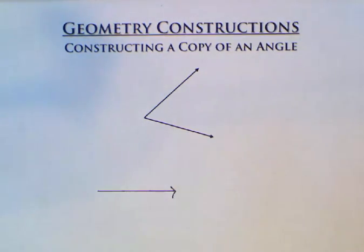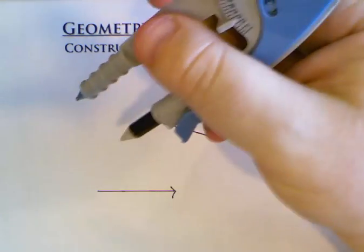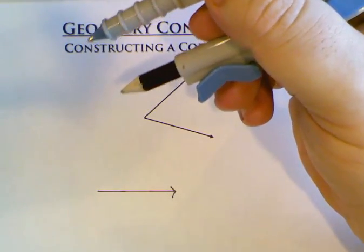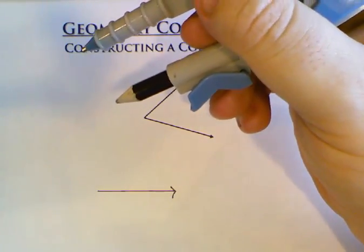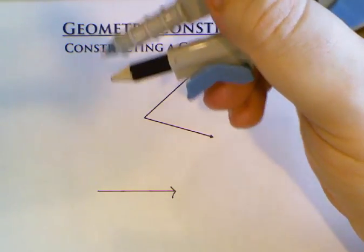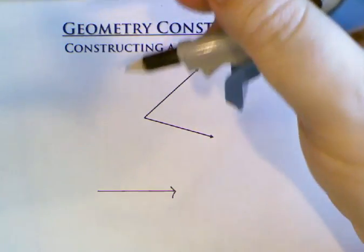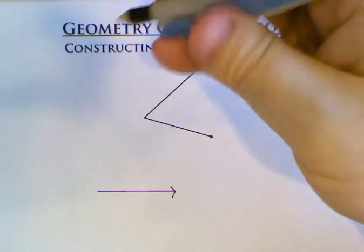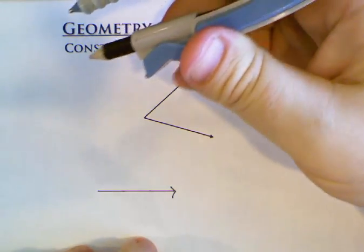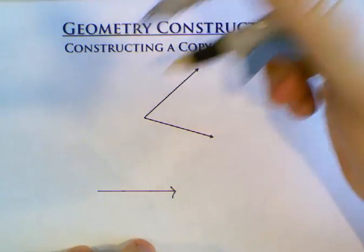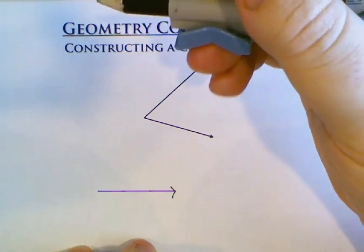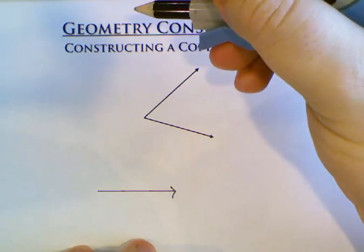The next thing is we need to make some arcs. Now to make these arcs you get to decide how big you want to open up your compass. Too small is hard to work with, really big is hard to work with, where there's going to be some middle area that is a convenient size and one you feel comfortable doing. Whatever is your sweet spot, open up your compass to be exactly that size.